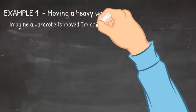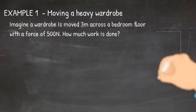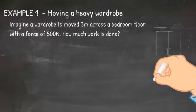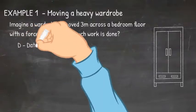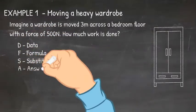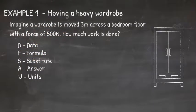Let's look at an example, moving a heavy object such as a wardrobe. So imagine a wardrobe is moved three meters across a bedroom floor with a force of 500 newtons. How much work is done? For a calculation question, I recommend using the data, formula, substitute, answer, and units method.